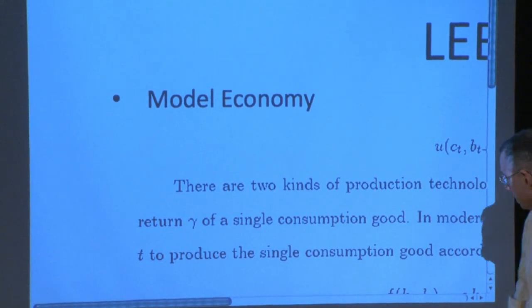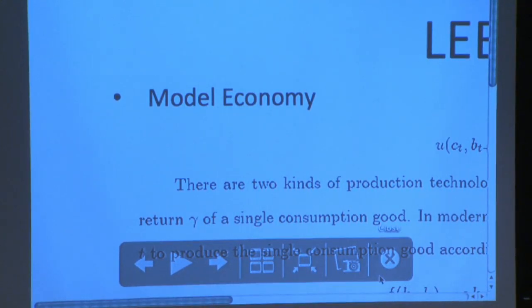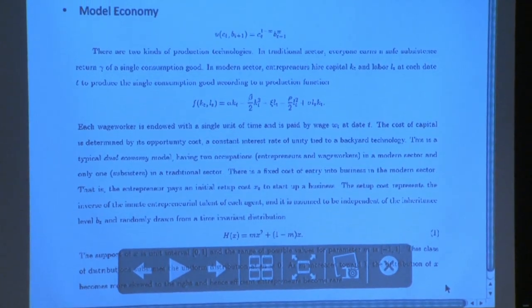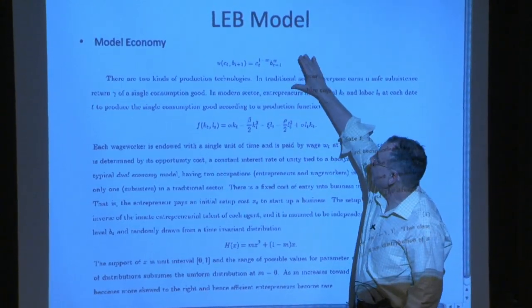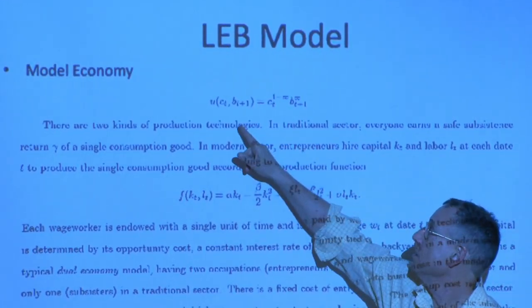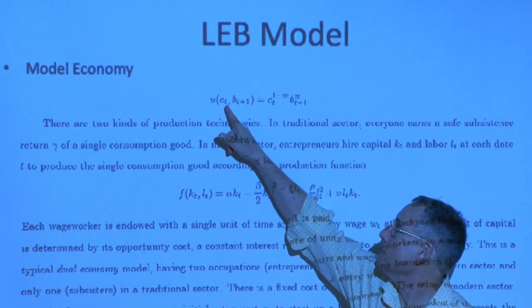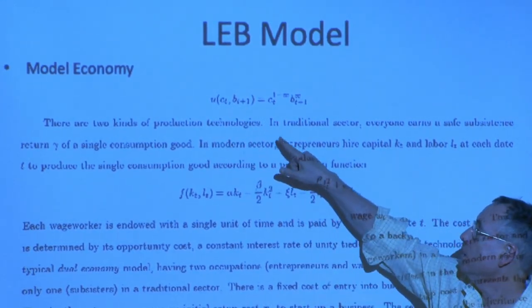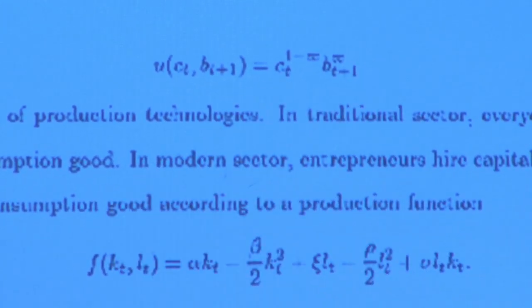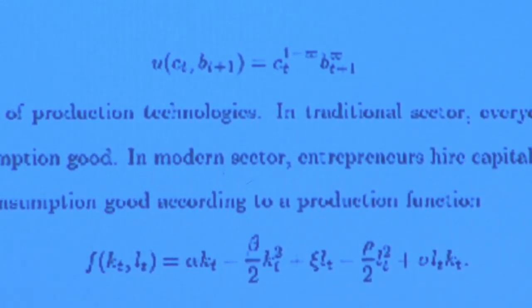So let me just grab three equations. Here are the structural functions of the model. There's a trade-off between consumption and bequest under this utility function — it's basically Cobb-Douglas in today's consumption and tomorrow's wealth. The parameter omega is basically going to determine the savings rate, and we're going to have to calibrate it.